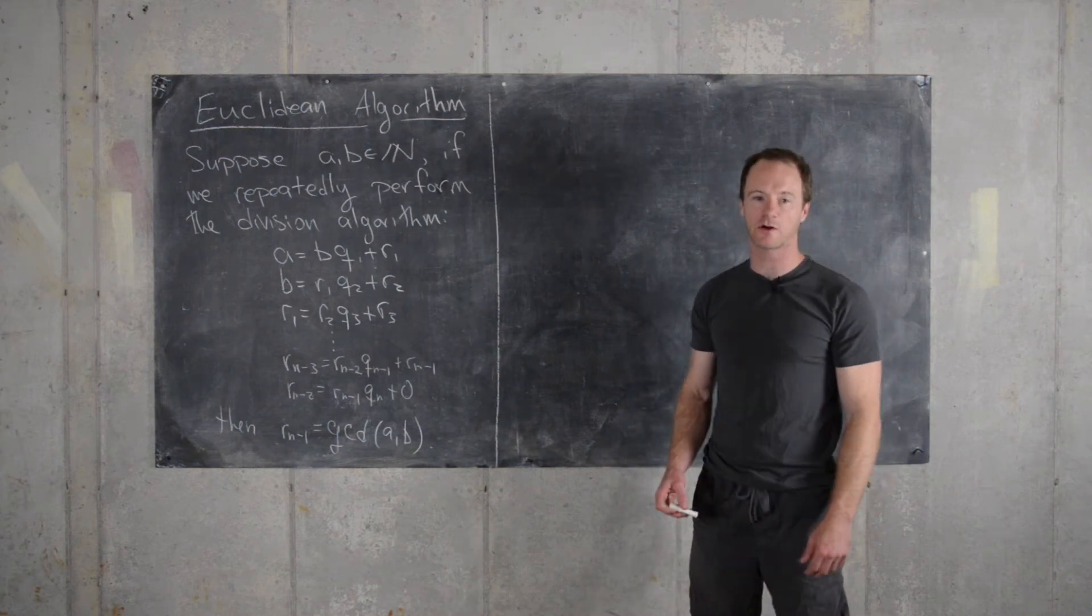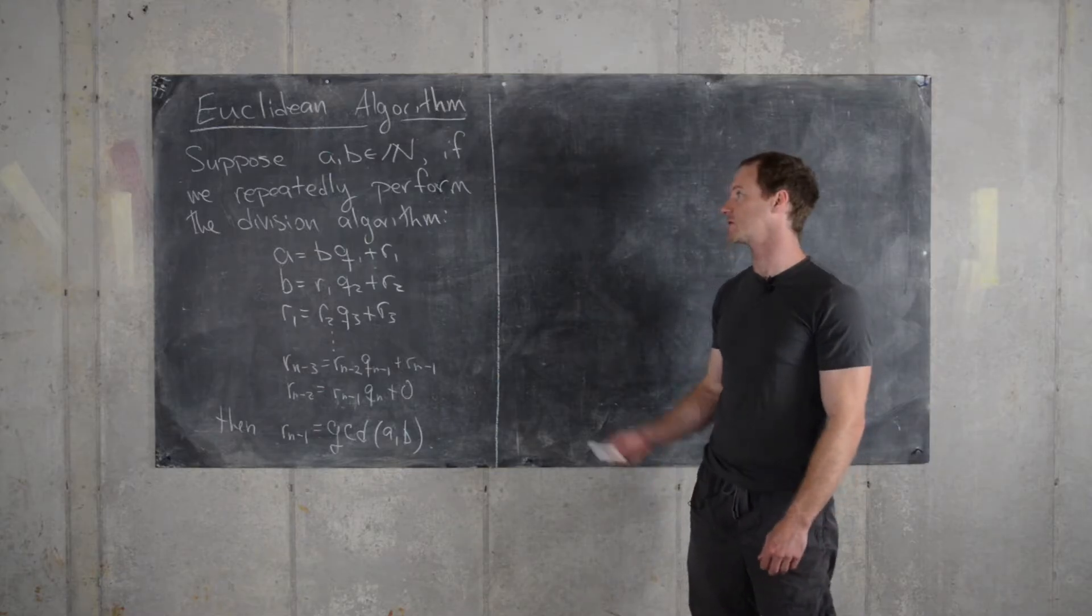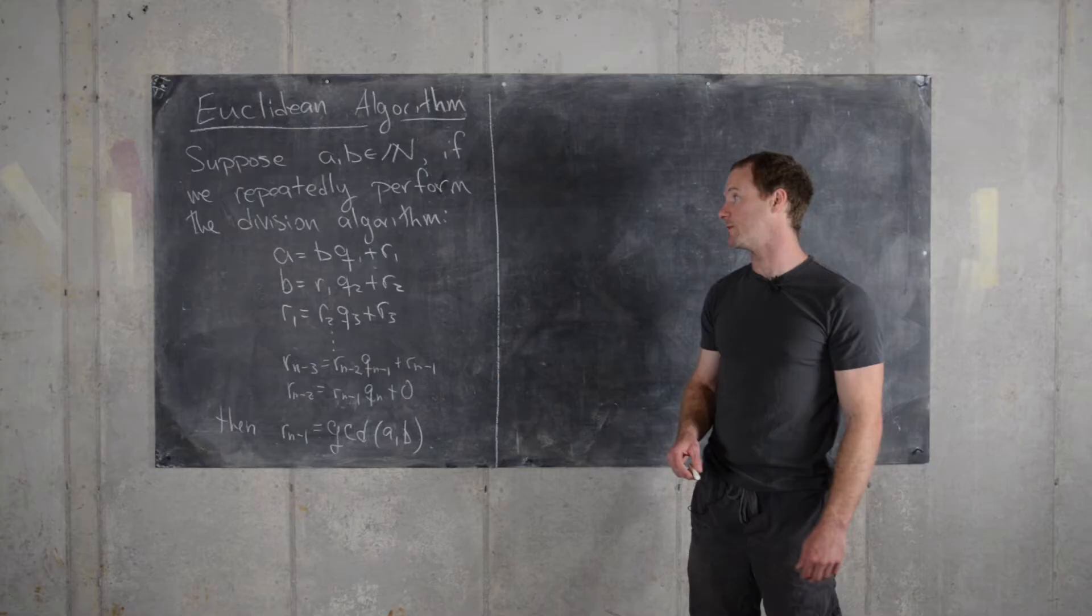Here we're going to look at the Euclidean algorithm and its proof. This is a method of finding the GCD given any two natural numbers. So let's look at the precise statement.